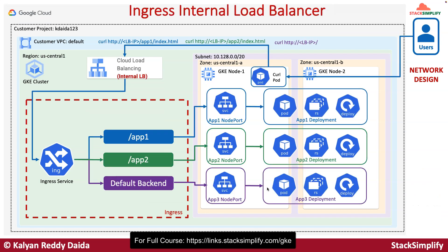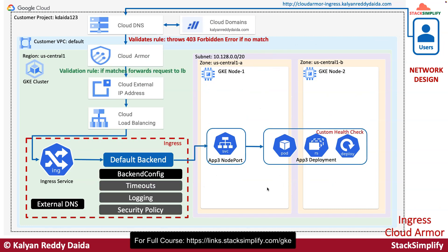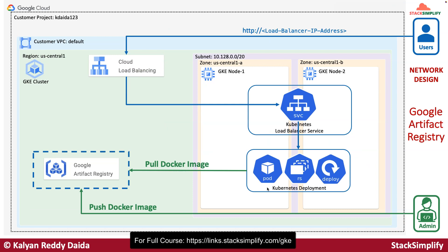After that, we will implement the ingress internal load balancer. Once that is completed, we will implement ingress with Cloud Armor. Once the Cloud Armor demo is completed, we will move on to implementing Google Artifact Registry. So far, all demos used sample Docker images available on Docker Hub. But in this demo, we are going to build a Docker image and push it to Google Artifact Registry, and from there download and use it for our Kubernetes deployment — using all Google Cloud services only without any external service for Docker images.